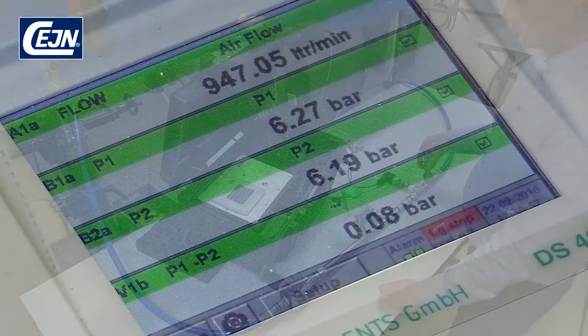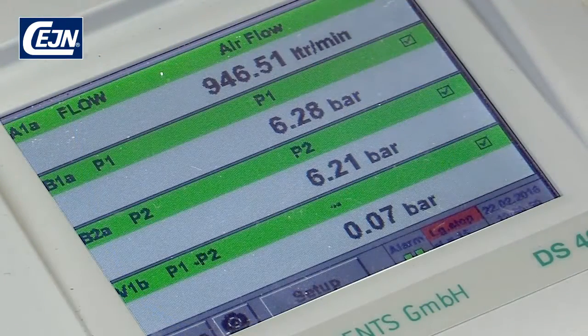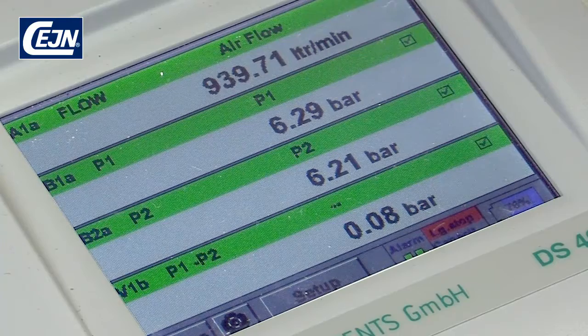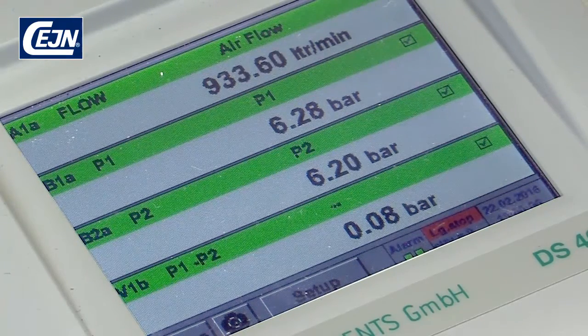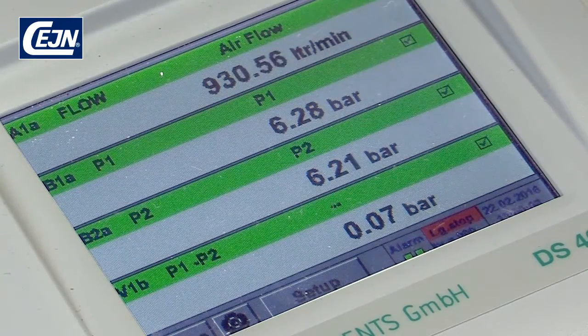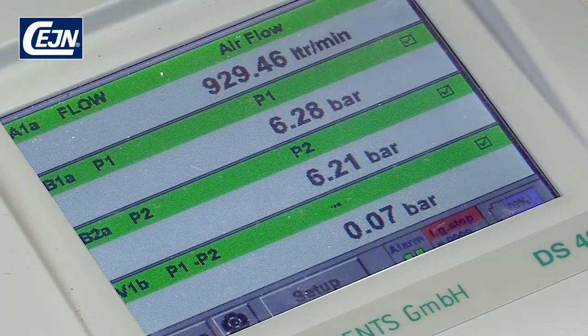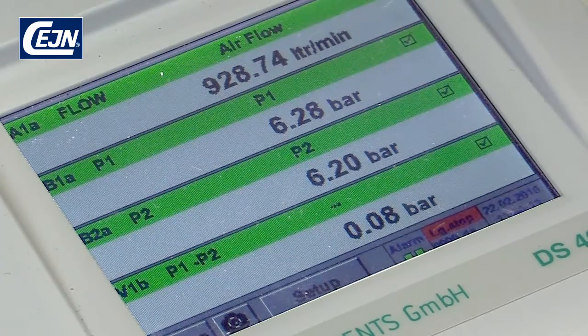Use the valve to adjust how many litres you want to flow through. In this case, we want it to be around 900 litres. On the screen, you can see the flow, pressure at P1 and P2, and the difference between P1 and P2.